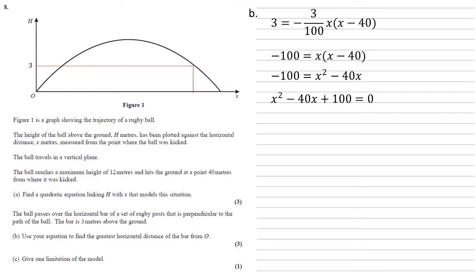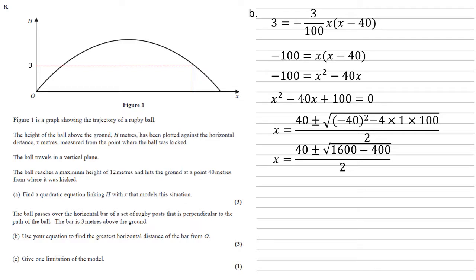So this is a quadratic, so we can solve it using the quadratic equation, with a equals 1, b equals minus 40, and c equals 100. So this gives us that x equals 40 plus or minus the square root of 1600 minus 400 all over 2, which simplifies to 40 plus or minus root of 1200 over 2. So it's 20 plus or minus 10 root 3.